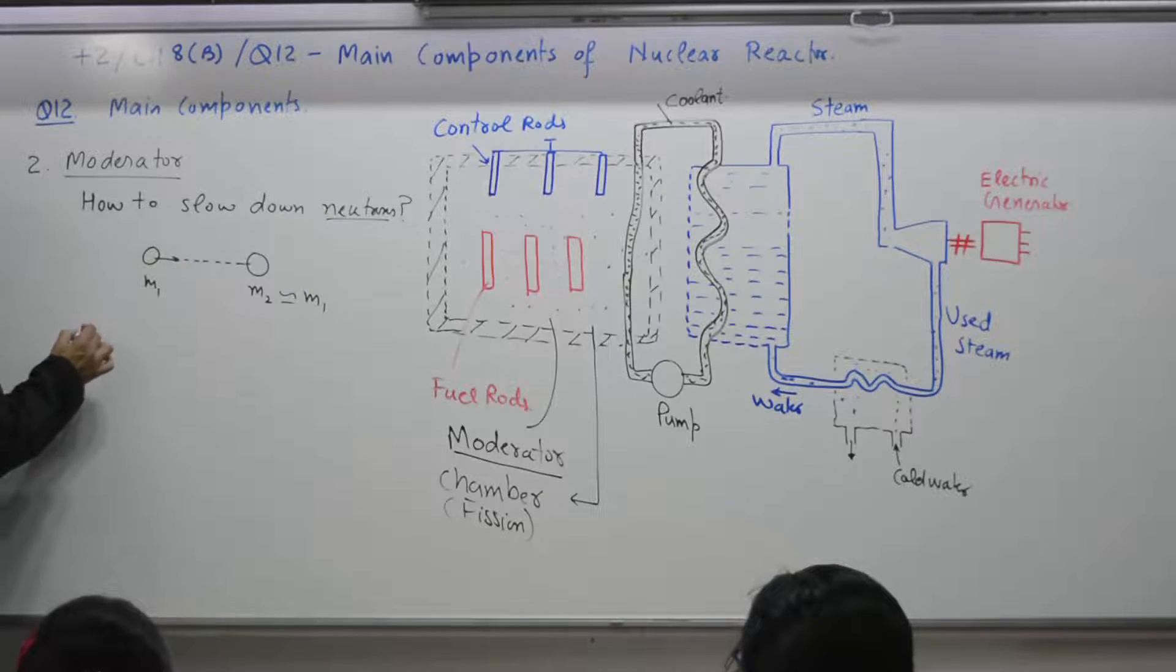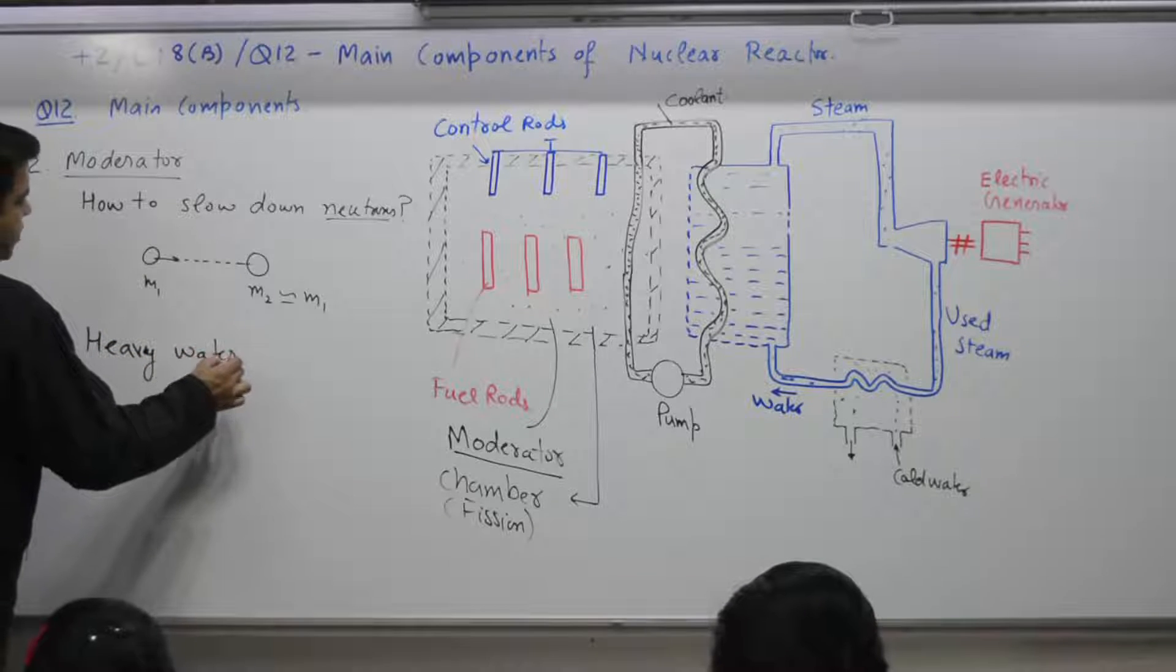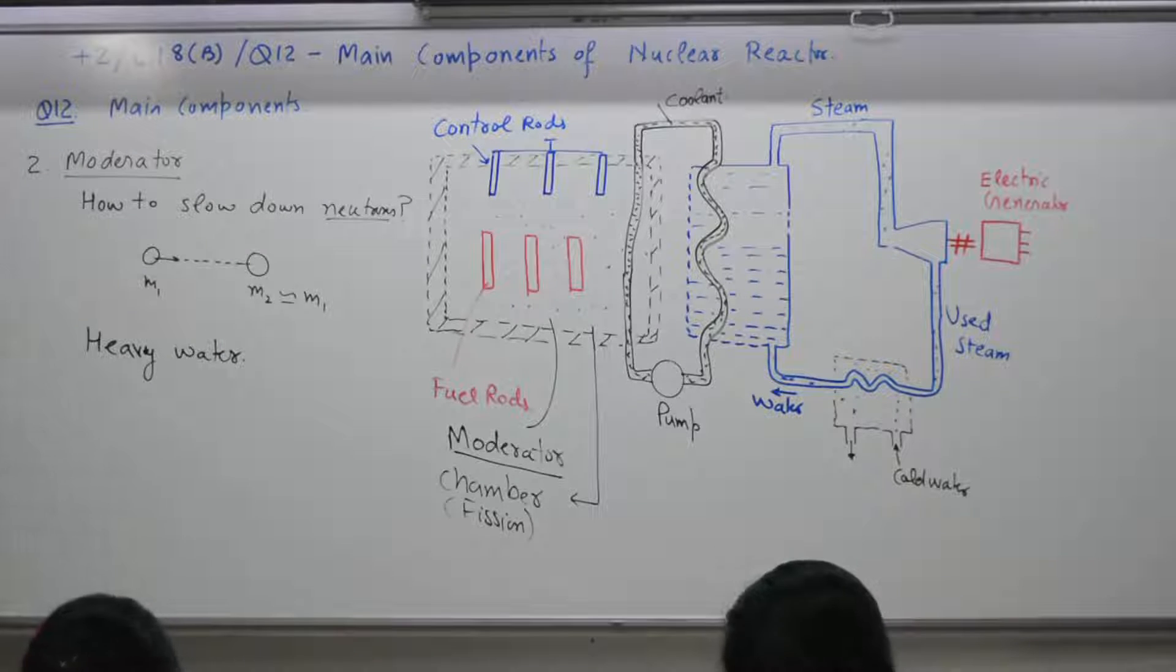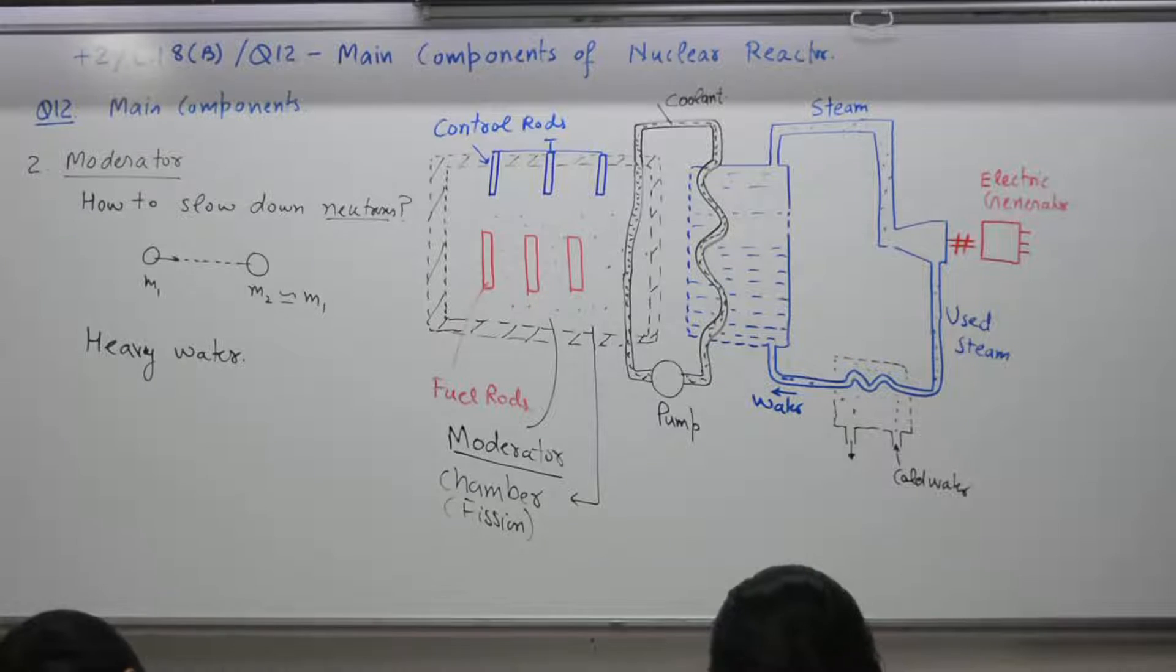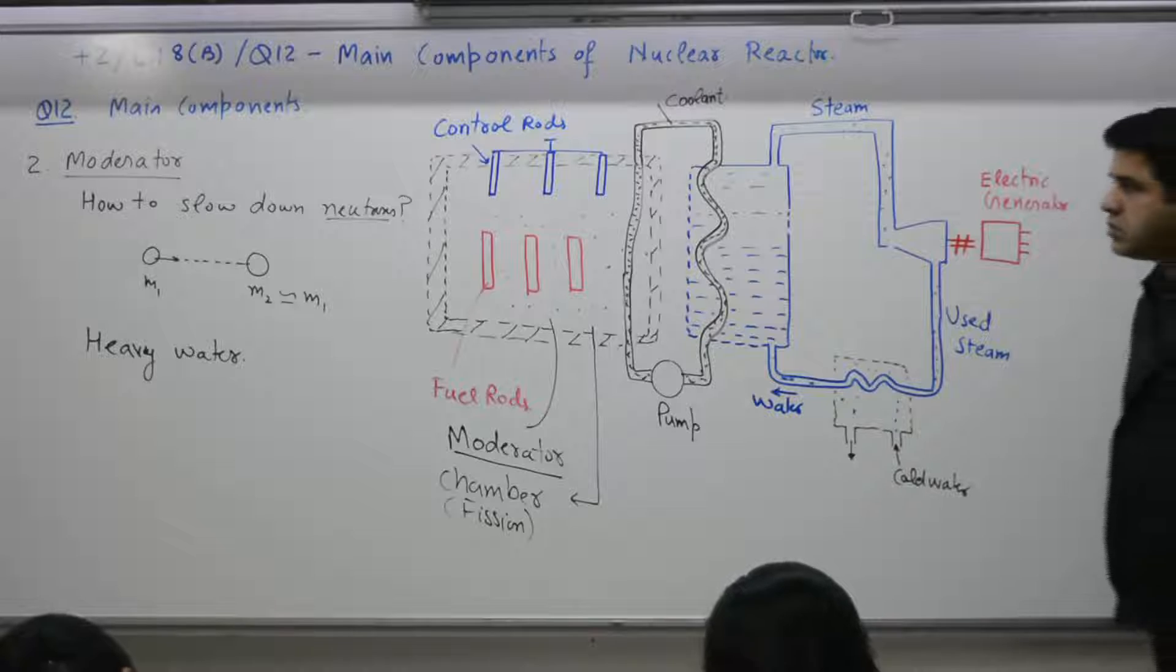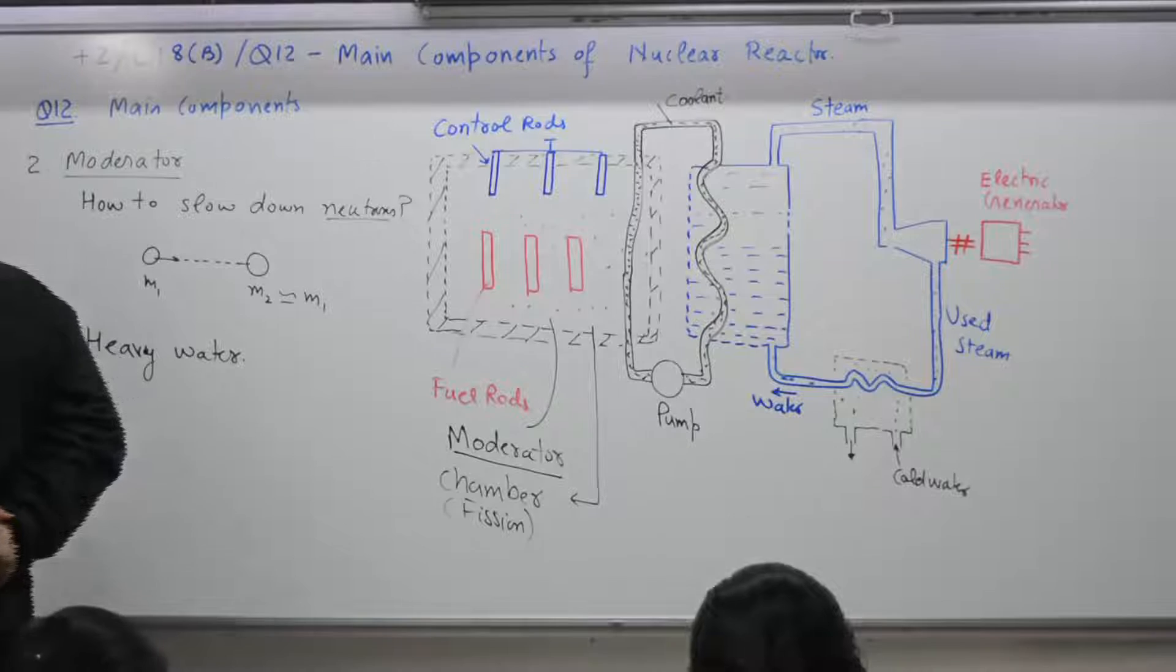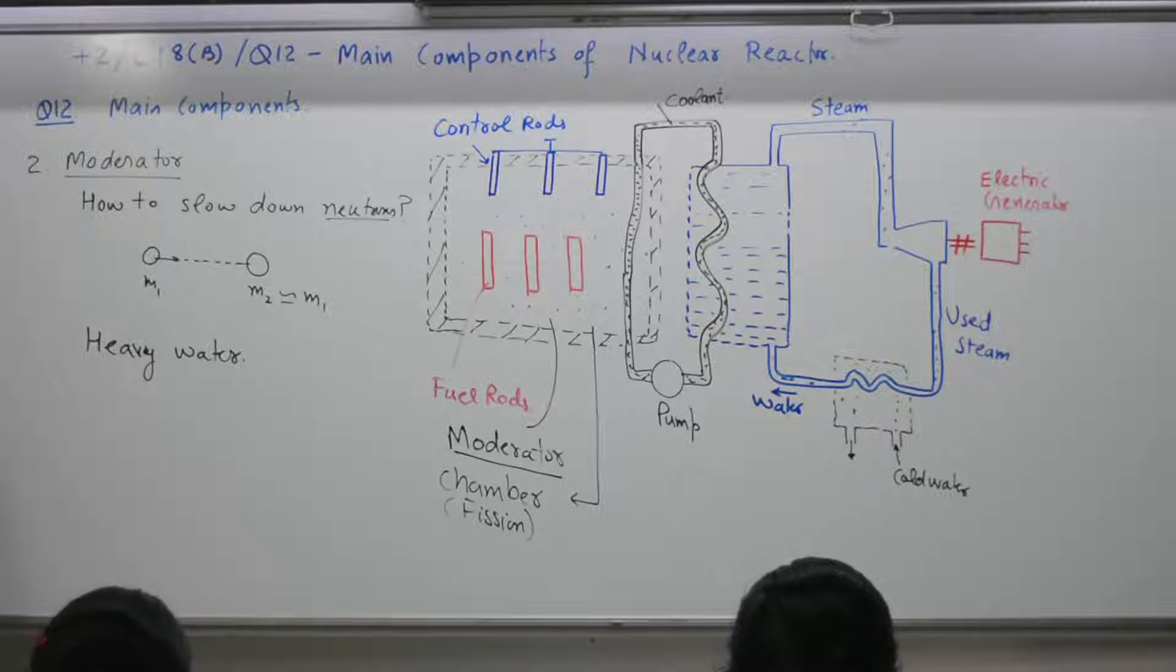Those are having particles comparable to that of neutron that is a proton or neutron rich particle. That is why. Material is, yes. Heavy water. That is why. Heavy water is used to slow down, pen down.